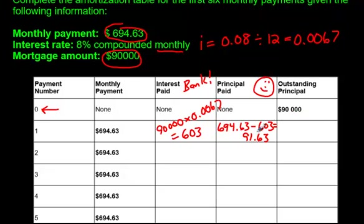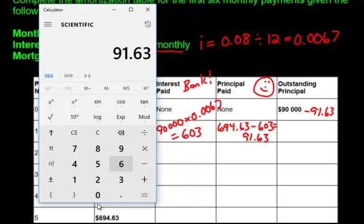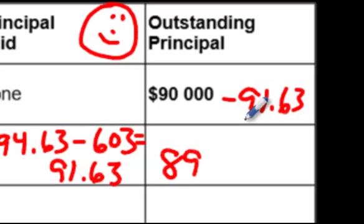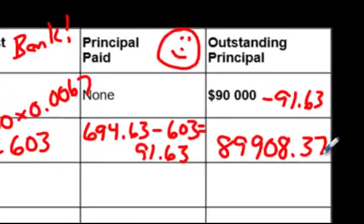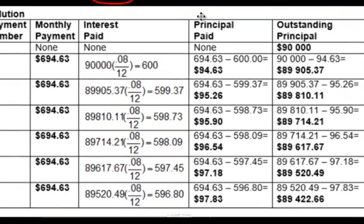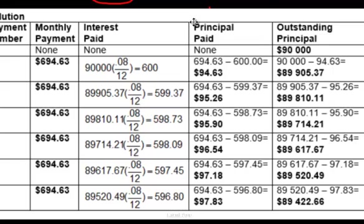You owed $90,000. Now you only owe $90,000 minus $91.63 — that's sad. You still owe $89,908.37. You still owe a heck of a lot of money. What I did was copy and paste the solution so you can always push pause and check out what happened.